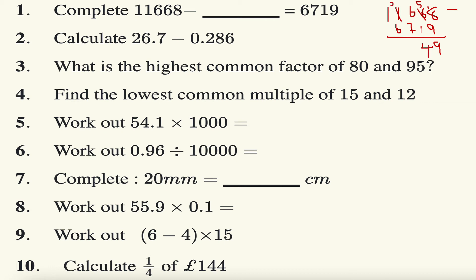From here, that becomes a 0, that becomes a 1. 16 minus 7 is 9. 0 take away 6 I can't do, so I have to exchange or borrow we say. 10 take away 6 is 4. So 11668 subtract 4949 gives me 6719.